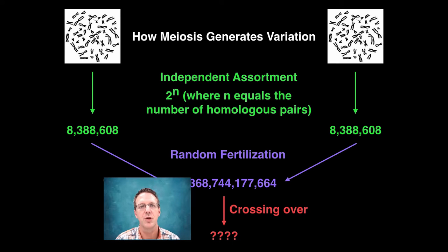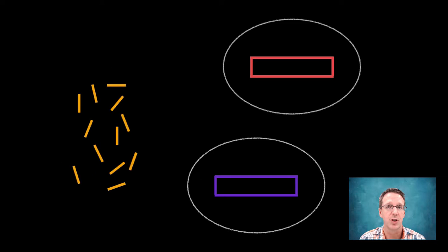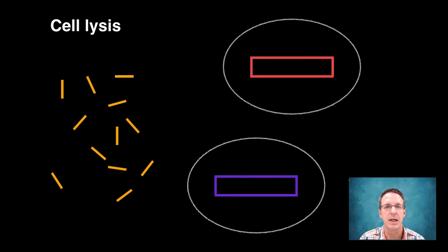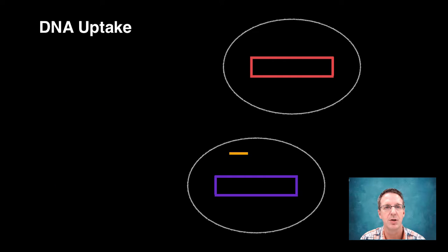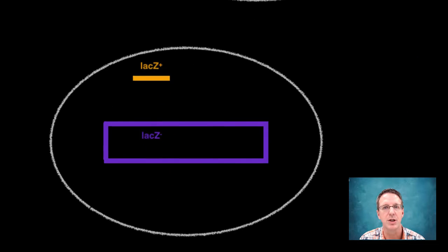The first is transformation, which was first described by Griffiths back in 1928. This occurs when bacterial cells die and release fragmented DNA, which then can be taken up by other nearby cells. Now, once this DNA fragment enters the recipient's cell, it lines up with the corresponding DNA sequence in the bacterial chromosome, and homologous recombination, which is otherwise known as a double crossover event,